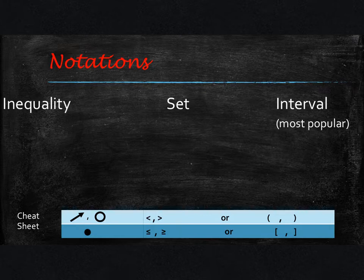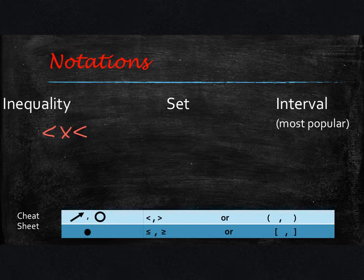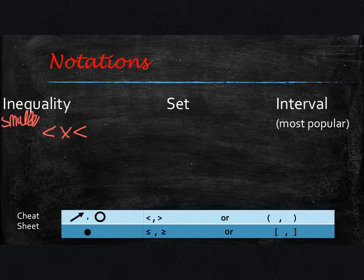For inequality notation, you're basically going to start — if you're doing domain, you're going to have the x variable; if you're doing range, you're going to use the y variable. You're going to start with this piece in the middle: less than x less than. You will always use less than when surrounding the x. So this would be like a between statement. If you have a beginning and an end, you have this between statement. On the left side, you will put the smallest x value.